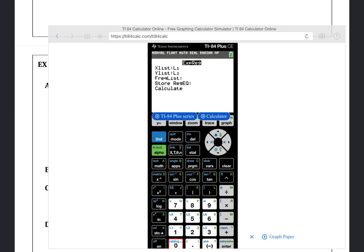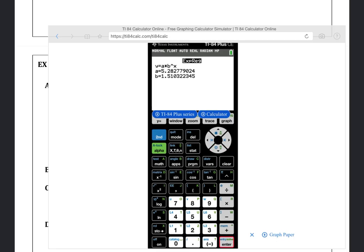and we want to go down to the store regression equation, choose vars, arrow right to y vars, and we're going to store it in the y1 screen of our graphing calculator. Arrow down to calculate, hit calculate, and we want to record those values.